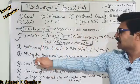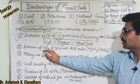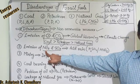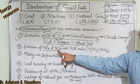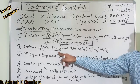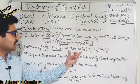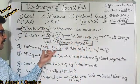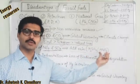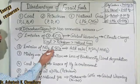The second disadvantage is that burning of fossil fuels generates large quantities of NOx and SOx. NOx means oxides of nitrogen — there are 7 oxides of nitrogen. SOx means oxides of sulfur — there are 3 oxides of sulfur. These oxides are further responsible for the formation of acid rain, particularly H2SO4 (sulfuric acid) and HNO3 (nitric acid).